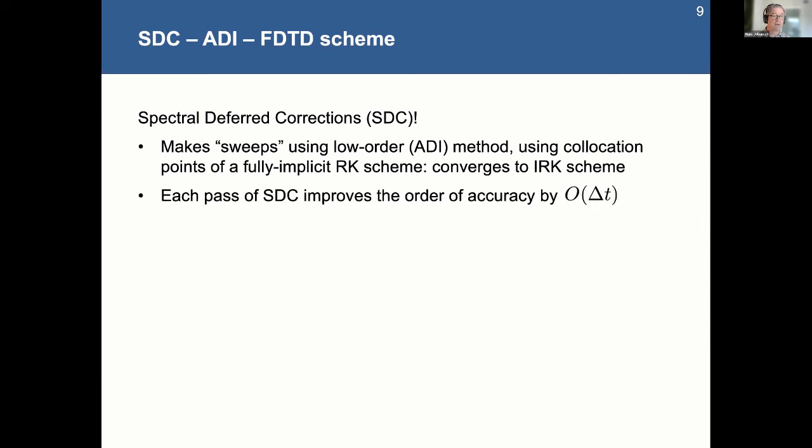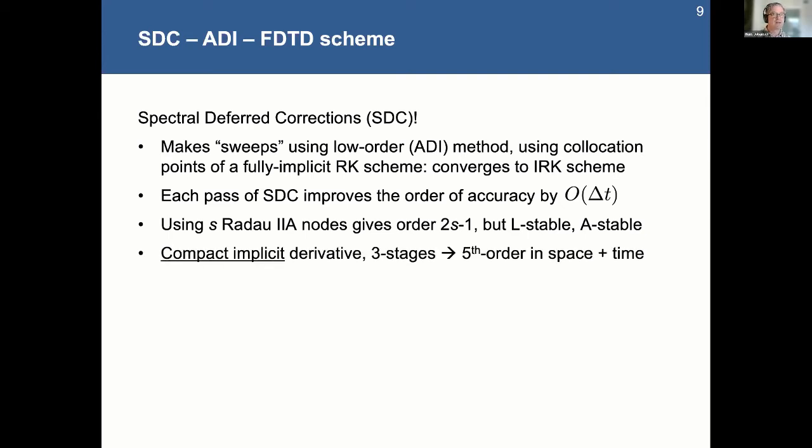So one of the things that you can show with the spectral deferred corrections iteration is that each pass improves the order of accuracy of your estimate by one order of delta T. And if you did something like choose the Radau 2A nodes, those don't include the initial node of the interval, but only the last points of the quadrature. If they are L-stable and they are also A-stable, which for a wave equation with no dissipation, as some of us have been talking about, is a big challenge.